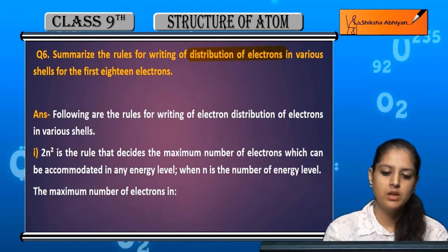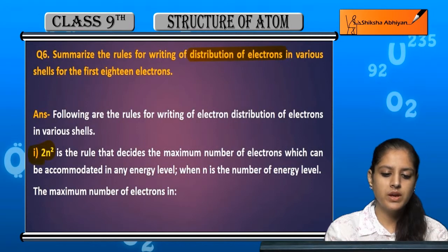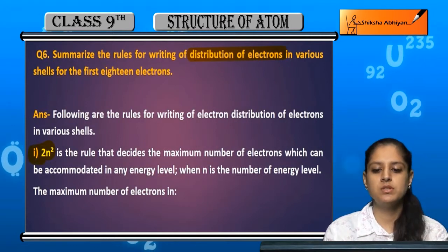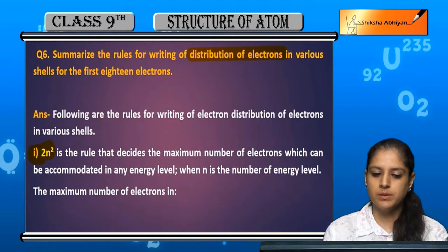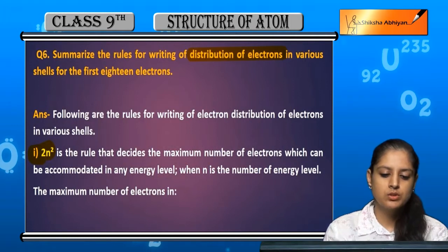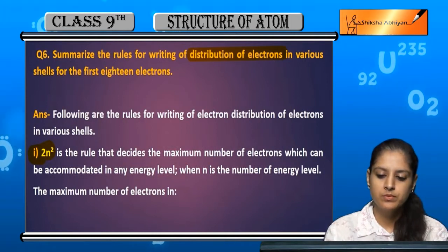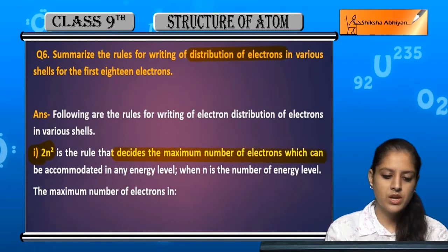The first rule is 2n². This rule decides the maximum number of electrons which can be accommodated in any energy level — the maximum number of electrons that can fit in any shell.